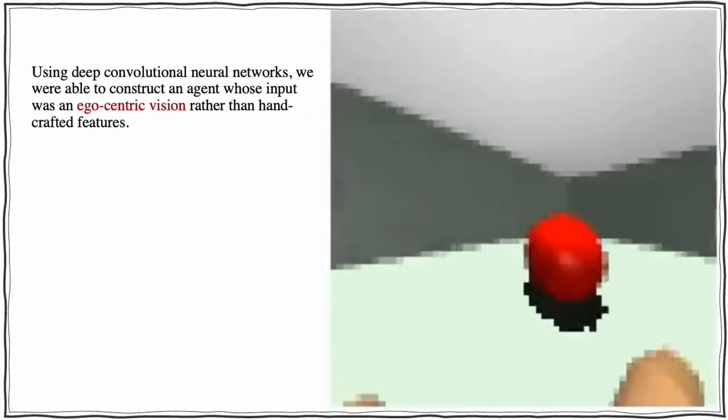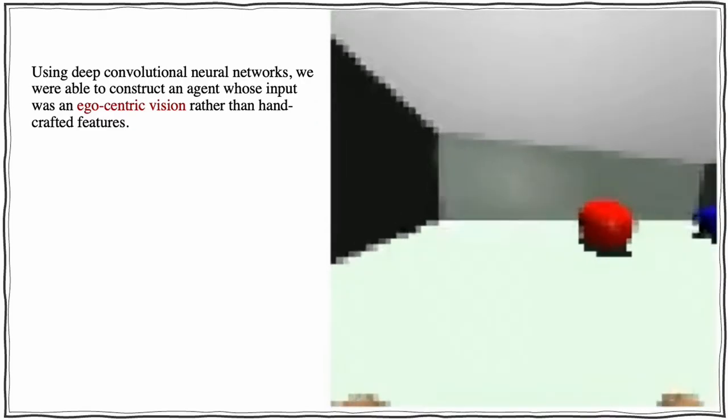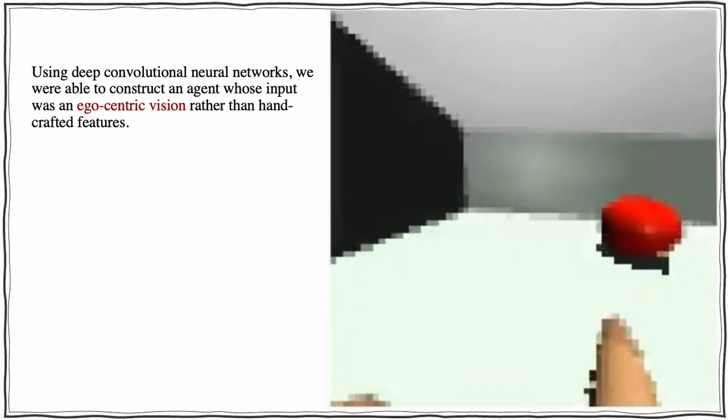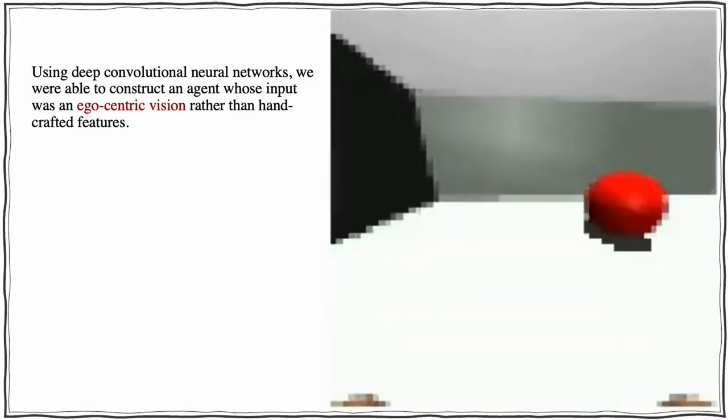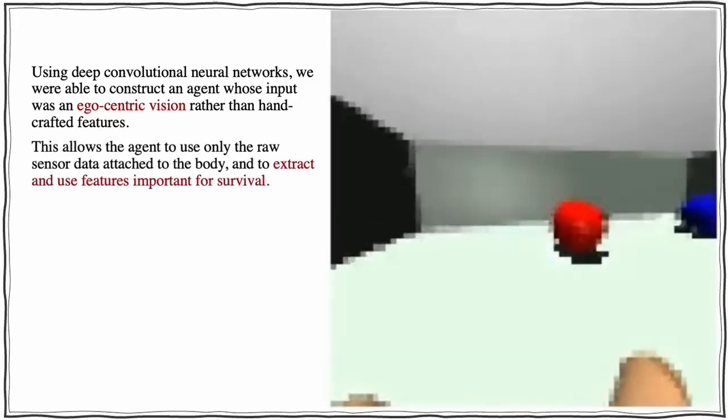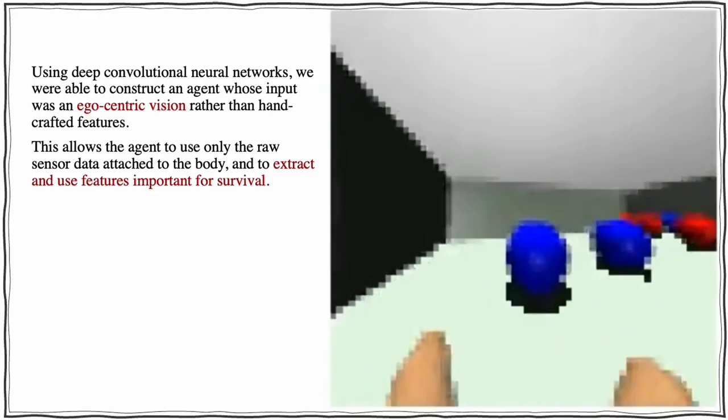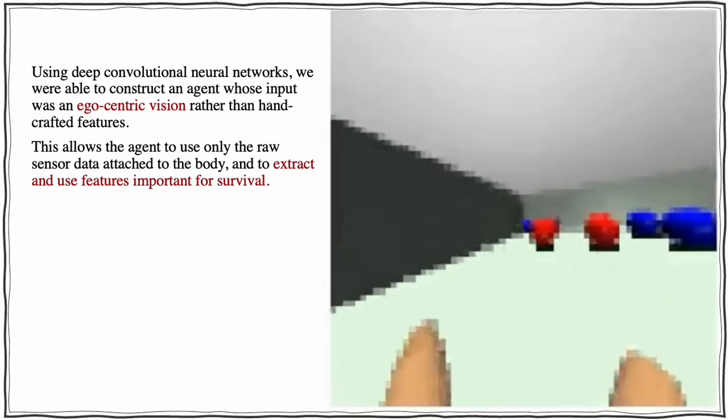Using deep convolutional neural networks, we were able to construct an agent whose input was an egocentric vision rather than handcrafted features. This allows the agent to use only the raw sensor data attached to the body and to extract and use features important for survival.